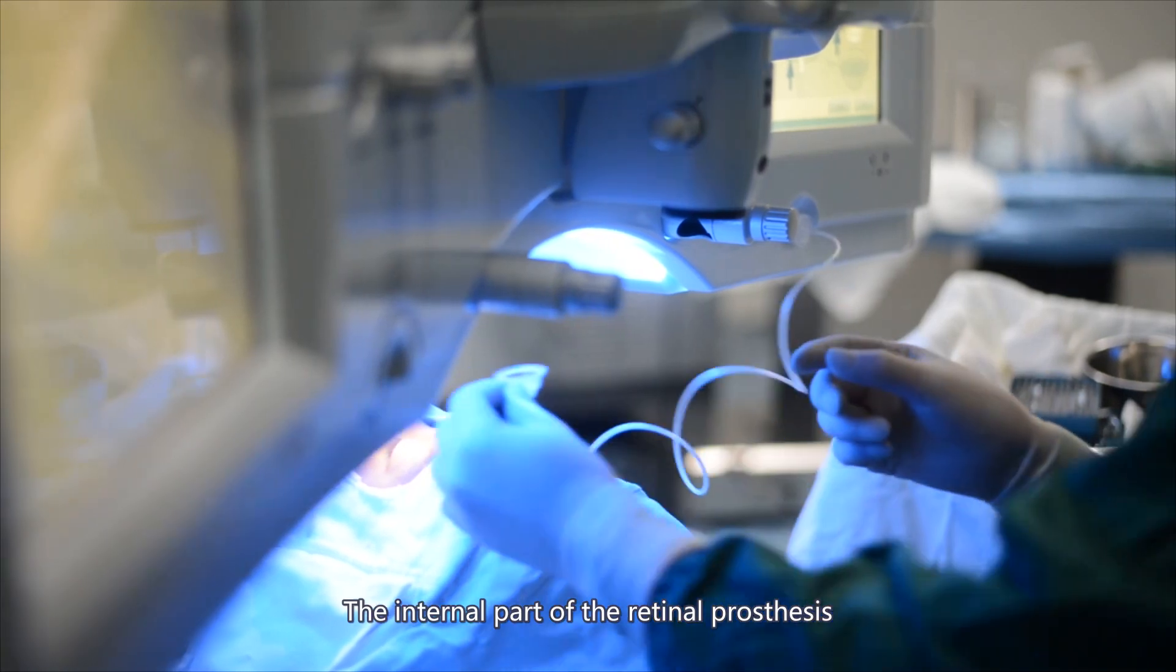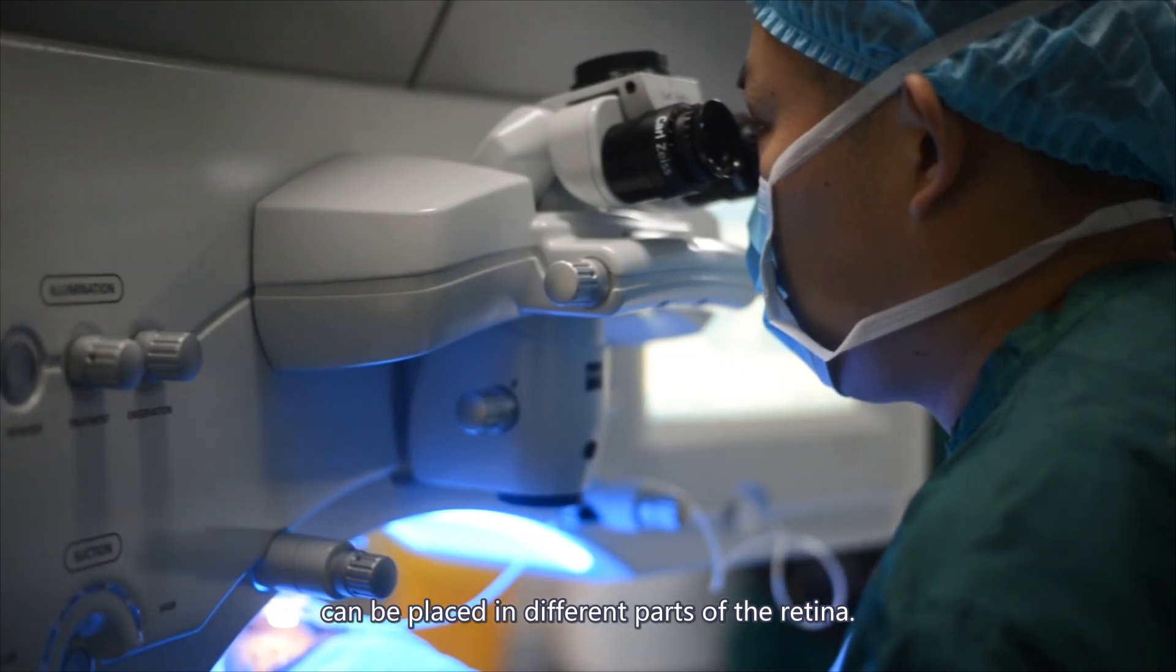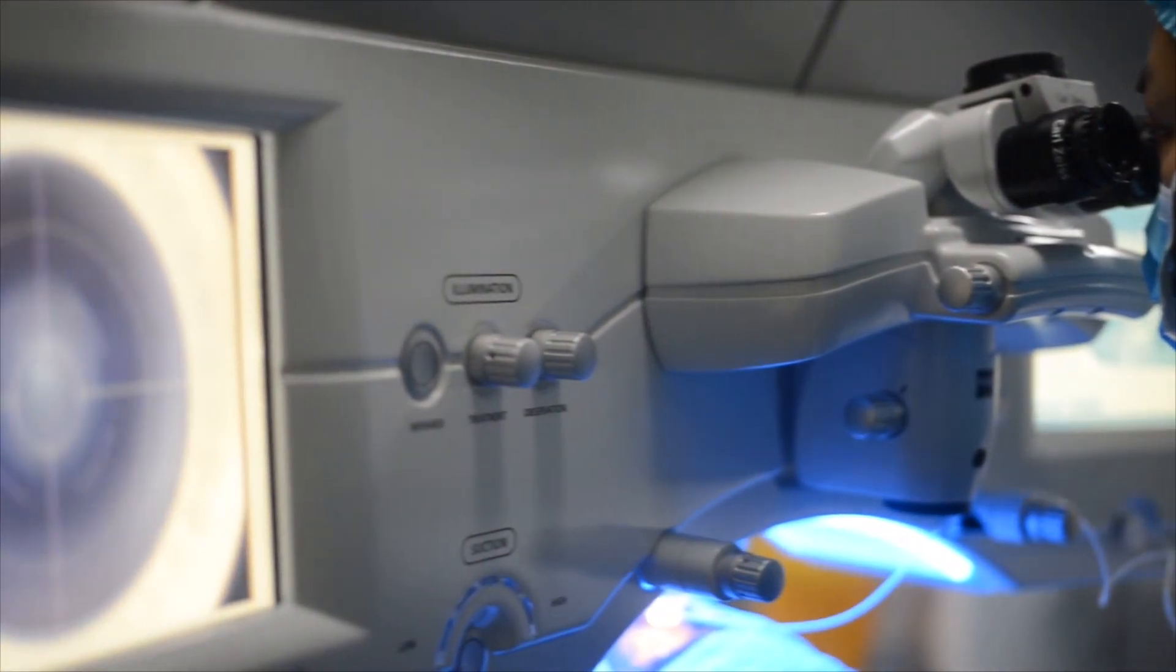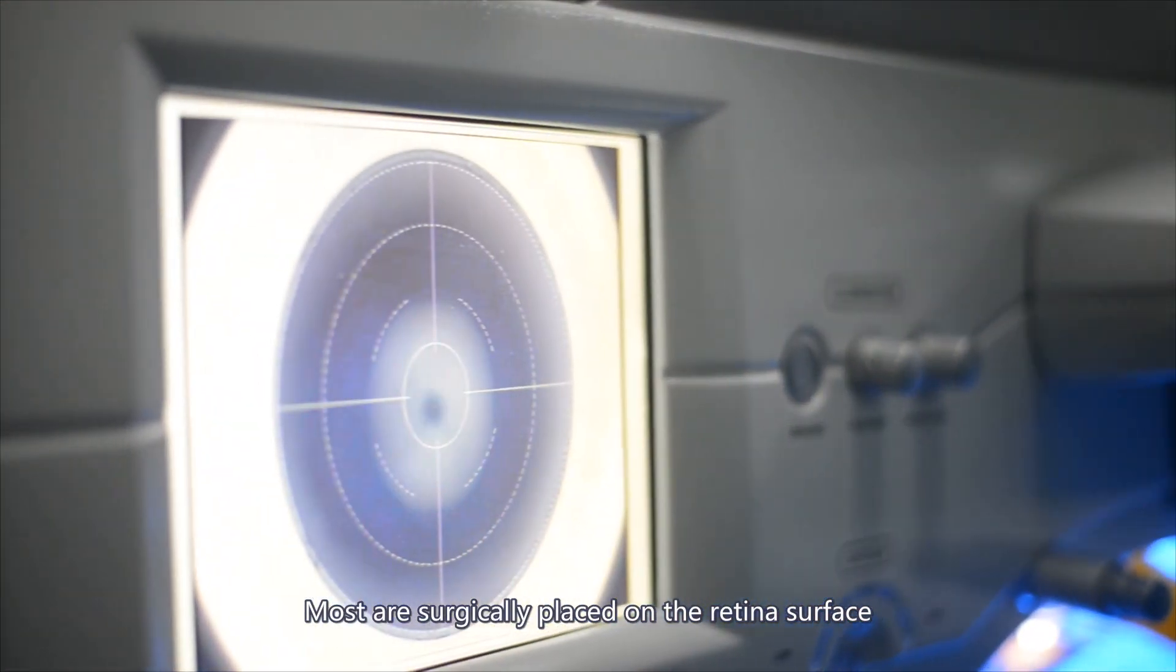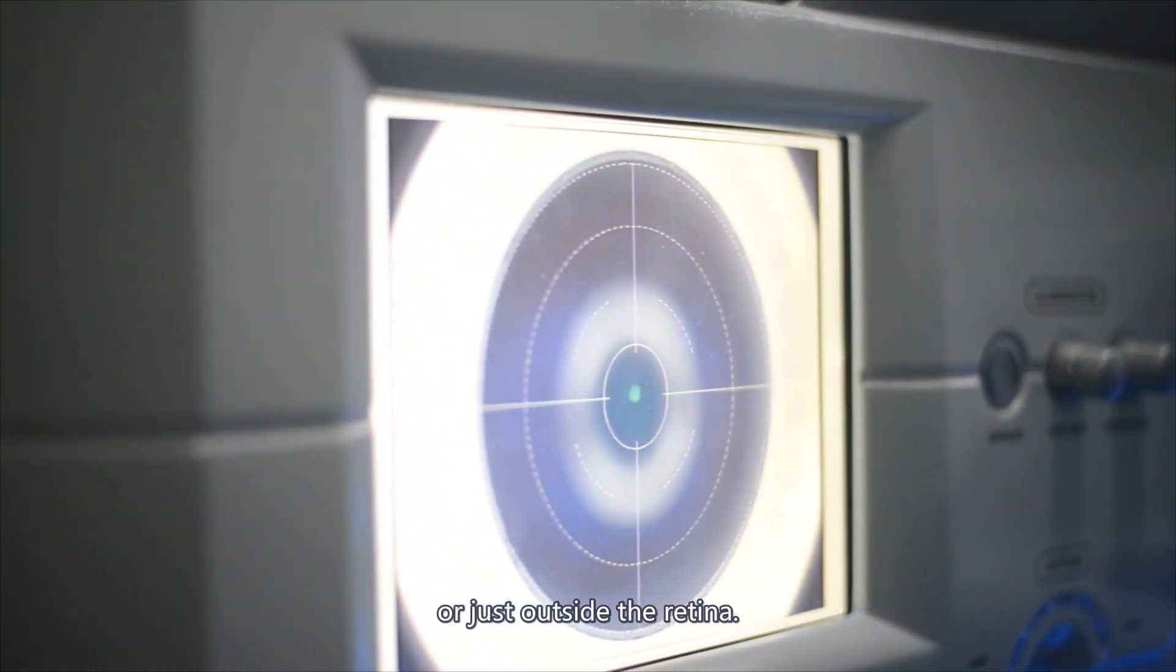The internal part of the retinal prosthesis can be placed in different parts of the retina. Most are surgically placed on the retina surface or just outside the retina.